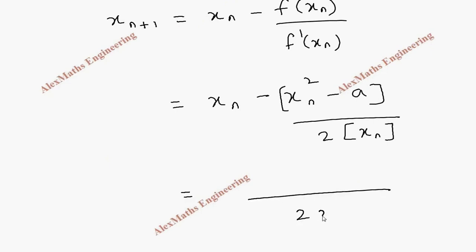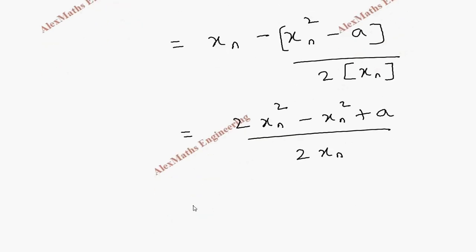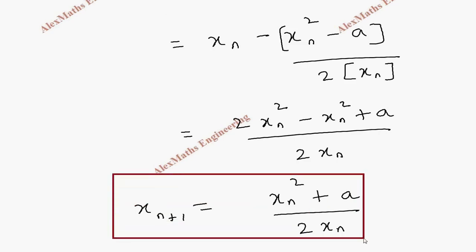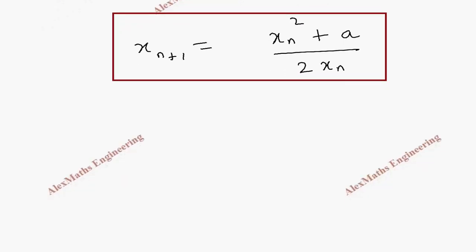The LCM is 2x n. This will become 2x n square and this is minus x n square. When I take this minus inside, it will become plus a. Now simplifying the first two terms, we get x n square plus a divided by 2x n. So this is our formula of x n plus 1. Using Newton-Raphson's method, we have derived a formula for calculating root a.